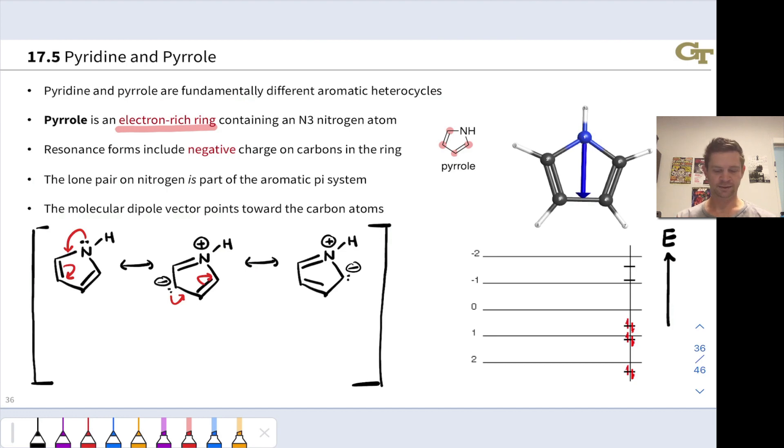we can keep going because check this out. We have a lone pair adjacent to a double bond. So we can push electrons like so and push the CN double bond electrons onto carbon to generate yet another resonance form with negative charge on another carbon. And we can do this one more time to shift negative charge to the fourth and last remaining carbon of pyrrole. So notice we've generated resonance forms with negative charge on all of the carbons, all four carbons of pyrrole, showing that all four carbons are pretty nucleophilic.